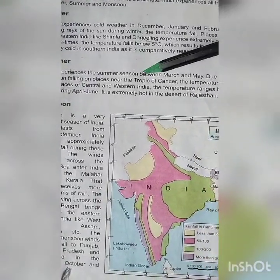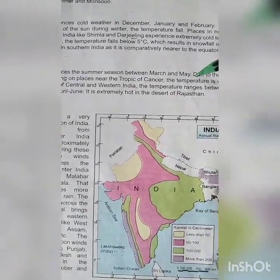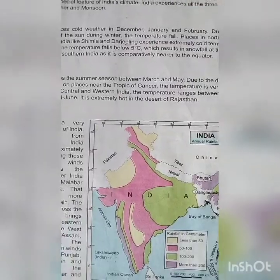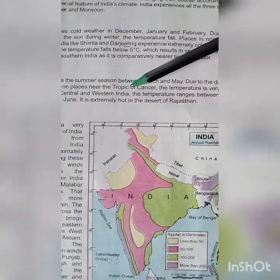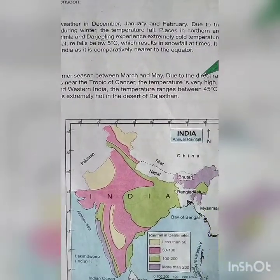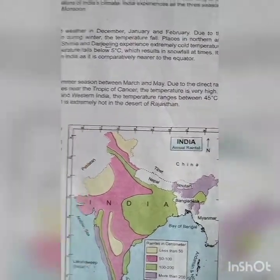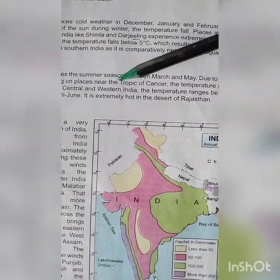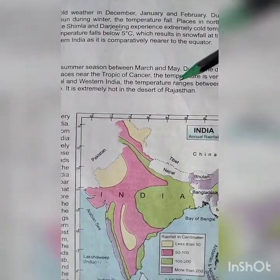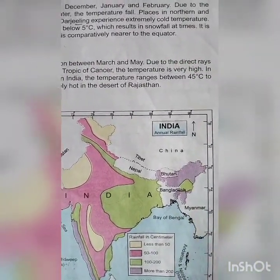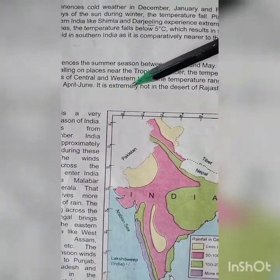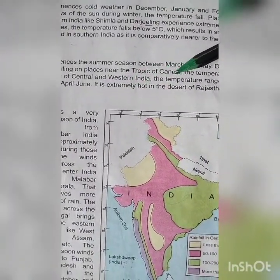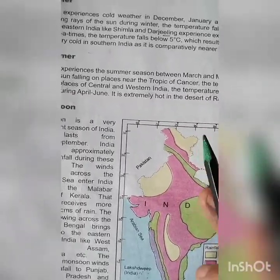Summer: India experiences a summer season between March and May. Due to the direct rays of the sun falling on the places near the Tropic of Cancer, the temperature is very high. In many places of central and western India, the temperature ranges between 45 degrees Celsius to 50 degrees Celsius during April to June. It is extremely hot in the desert of Rajasthan.